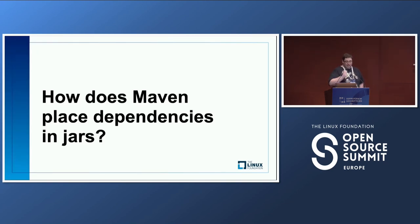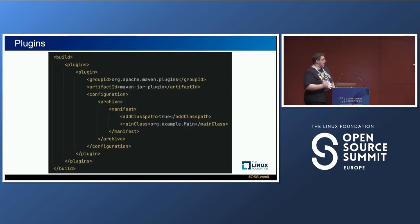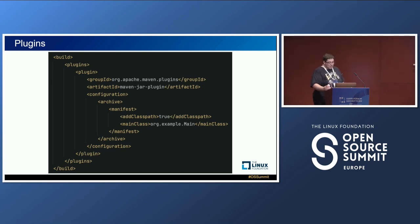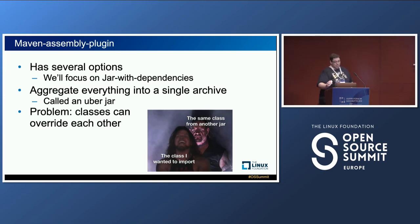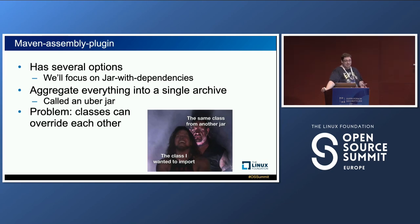Now that Maven has found all of your dependencies, how does it actually place them into a jar file? Maven uses plugins — some people even call Maven a plugin-running framework because there are a large number of important plugins. The two we'll look at today are the Maven Assembly Plugin and the Maven Shade Plugin. The Maven Assembly Plugin has an option called 'jar-with-dependencies,' which creates a jar that includes all of your dependencies — all within the same jar file, often called an uber jar.